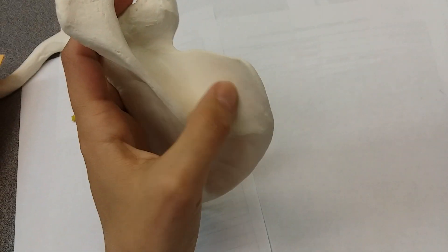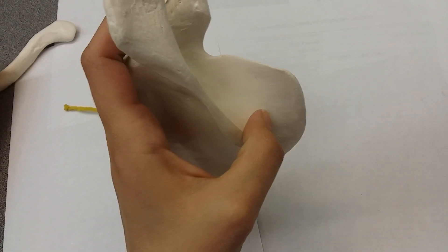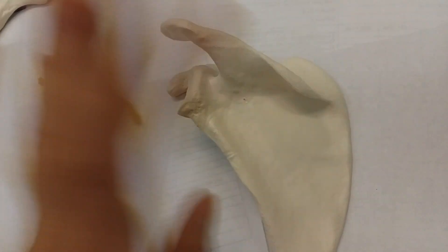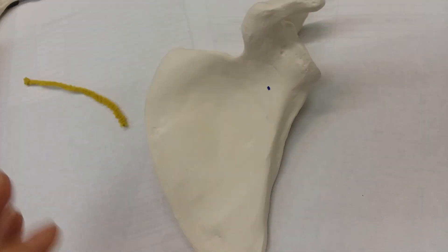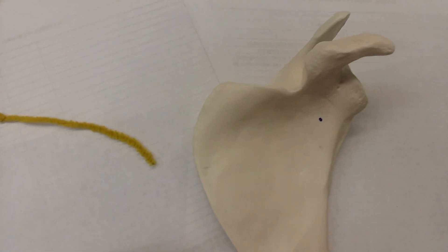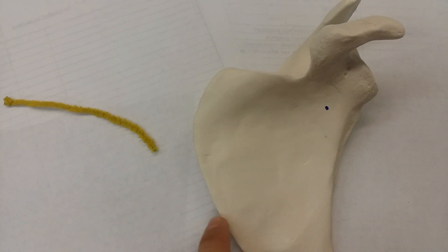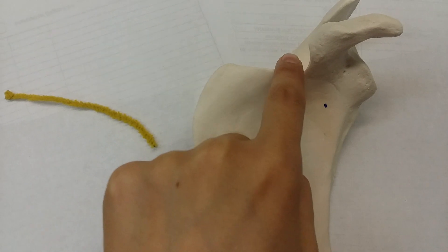Next we're going to have our superior angle, so we're going to flip back over to the anterior side to show you our superior angle. On this anterior position, your superior angle is going to be this—it is where your medial border meets the superior border.